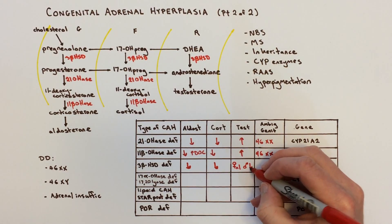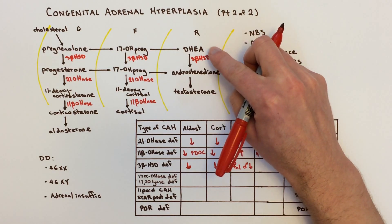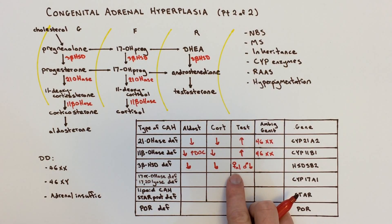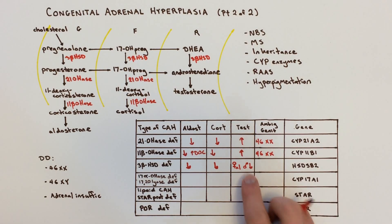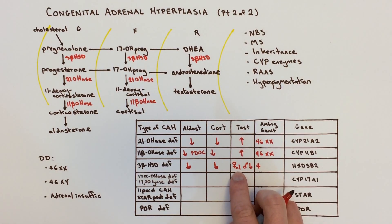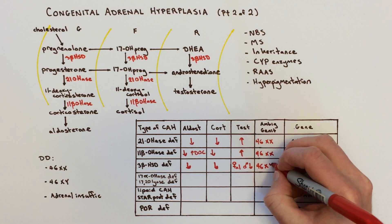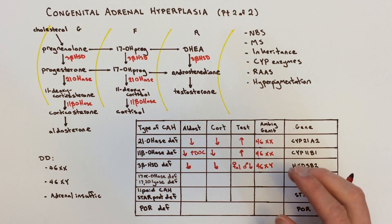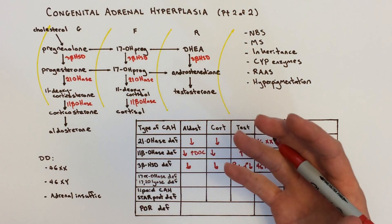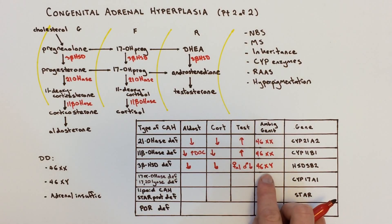DHEA can get peripherally converted, so a little bit leaks through. It turns out that for females that's sufficient, but for males it's not enough testosterone being made. Because males have low testosterone but females don't have particularly high testosterone, it's 46XY individuals who have ambiguous genitalia — an incompletely virilized male, for example with micropenis, perineal hypospadias, bifid scrotum, a blind vaginal pouch, or other abnormalities making the genitalia more female-like or incompletely male-like than expected.